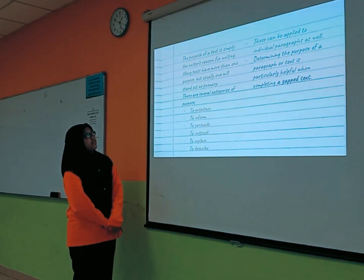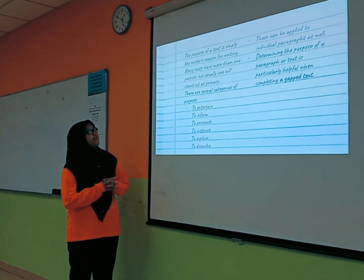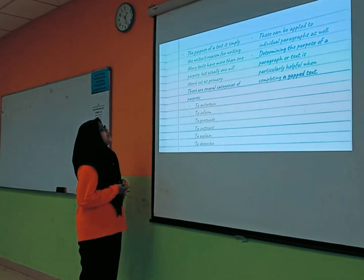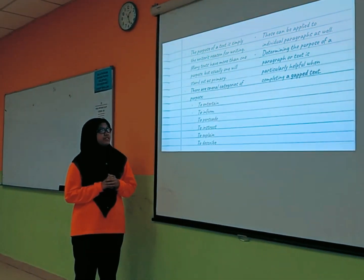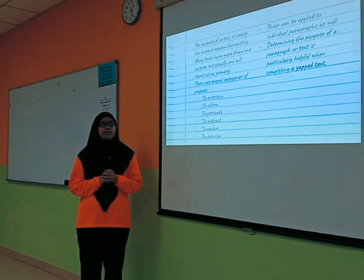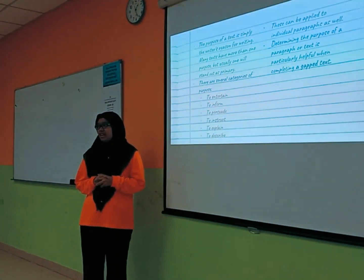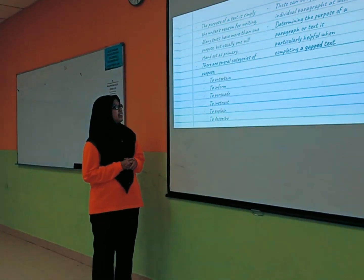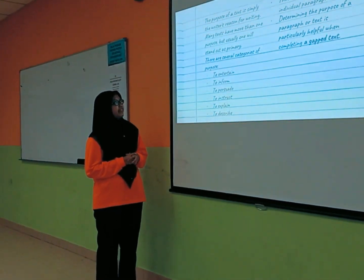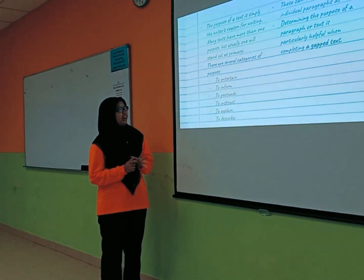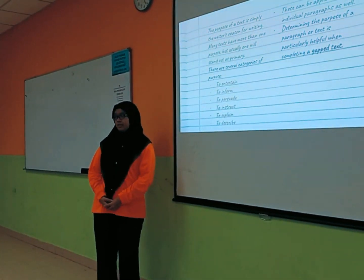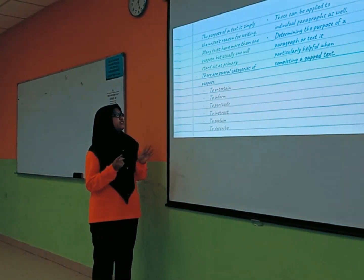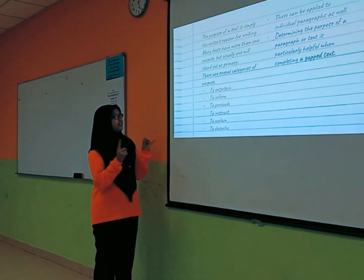The purpose of a text is simply the writer's reason for writing. There are several band ranges of the marks — there are six in total, which are 2xb, 4xb, 4xb, and 4xb, and 5xb.